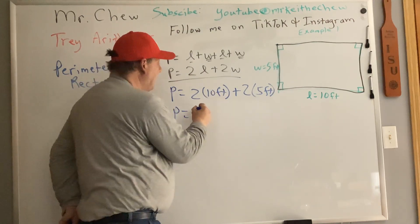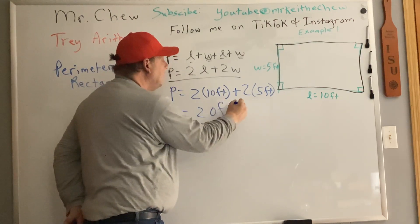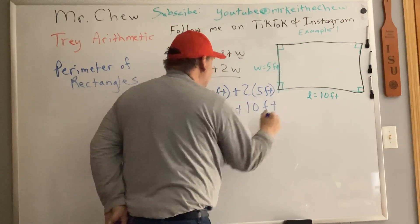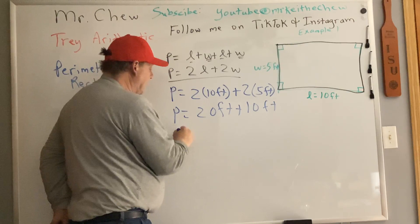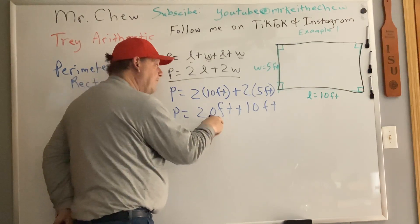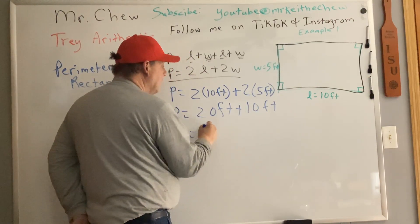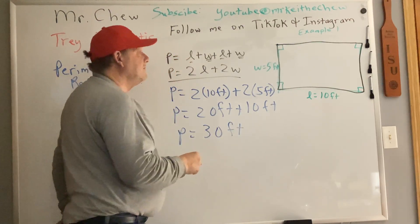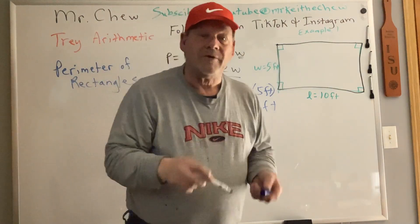Now we use what's called the order of operations. You multiply before you add. 2 times 10 feet is 20 feet. 2 times 5 feet is 10 feet. And then we combine like terms, which is the 20 feet plus the 10 feet, which is 30 feet. And that is the distance around that rectangle.